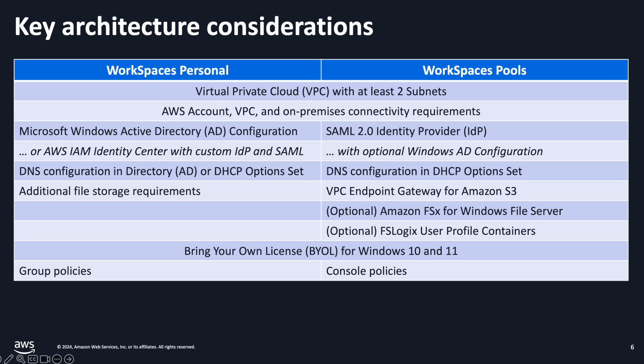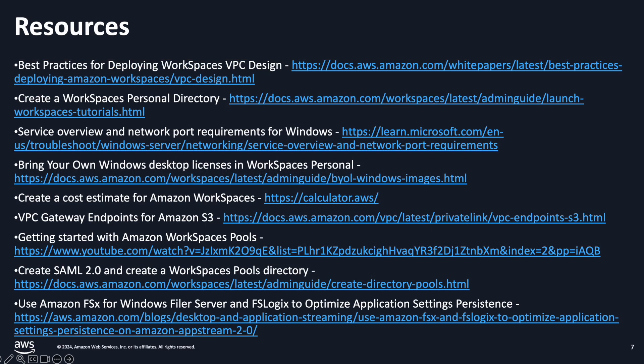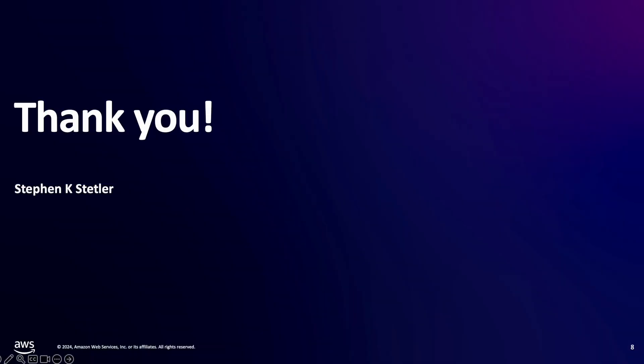If your license agreement with Microsoft allows it, you must first enable BYOL for your AWS account prior to creating the directory. In the resources section, you'll see links for creating a Workspaces Personal directory, the requirements for Active Directory, network and services port requirements, bring your own license requirements, creating a cost estimate for Amazon Workspaces, and other links to get you started. Thank you for allowing me to join your Amazon Workspaces family of services learning journey. I look forward to hearing from you in the comments.